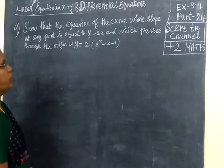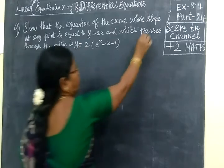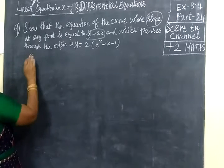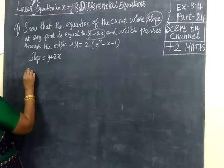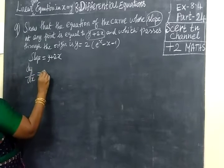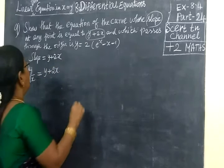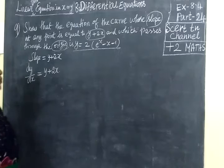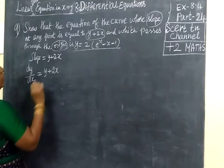Now, show that the equation of the curve whose slope at any point is equal to y plus 2x. Slope means dy/dx. So dy/dx equal to y plus 2x. And it passes through the origin, that is x=0, y=0. So dy/dx equal to y plus 2x.